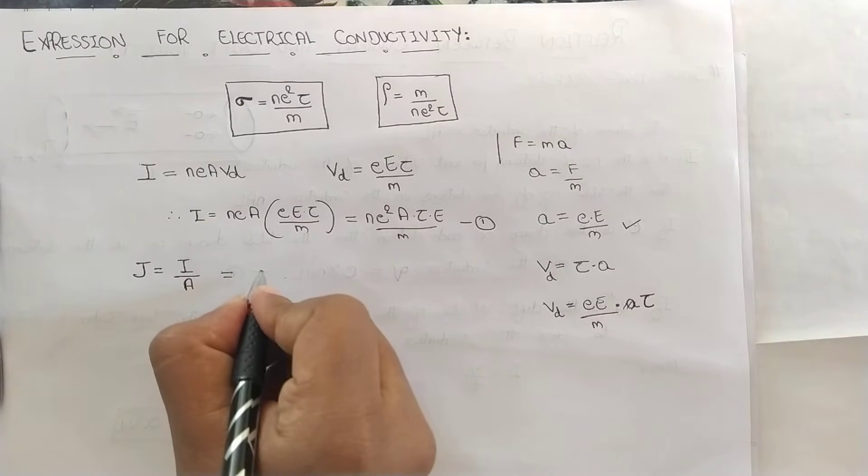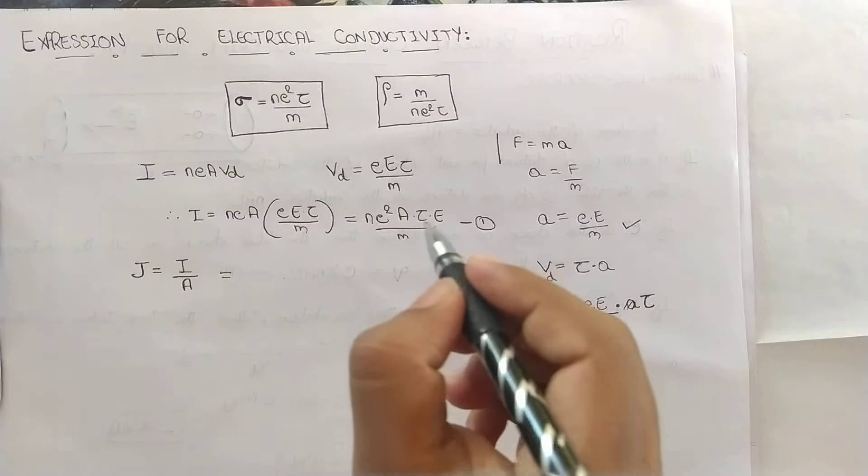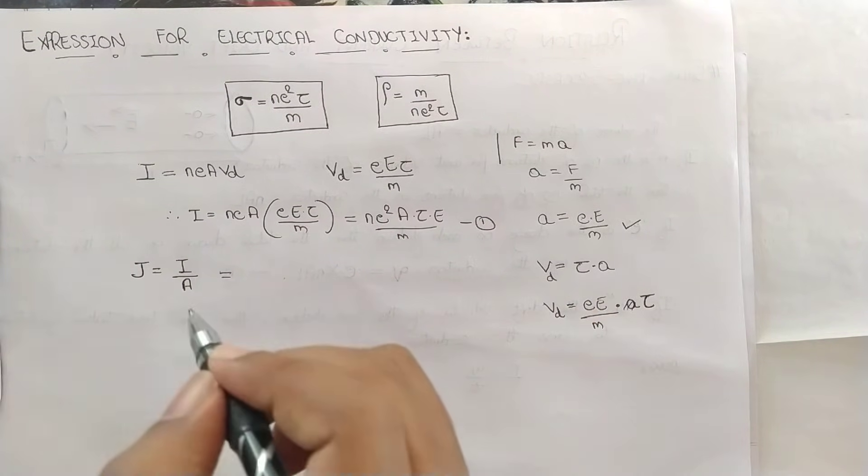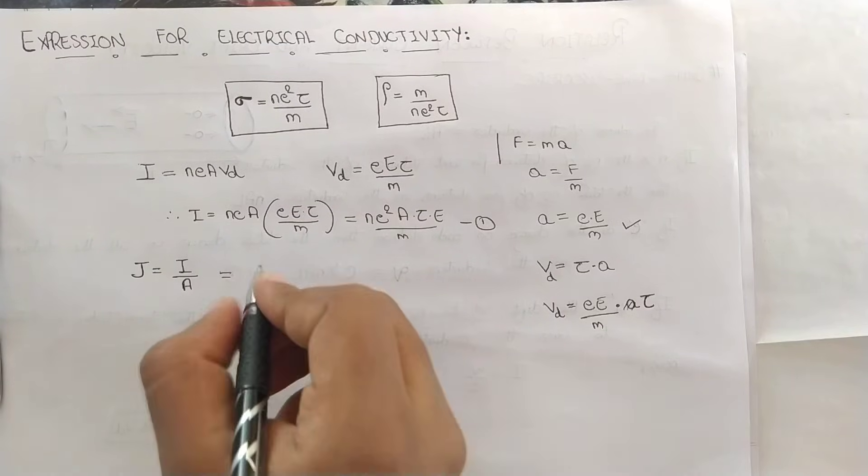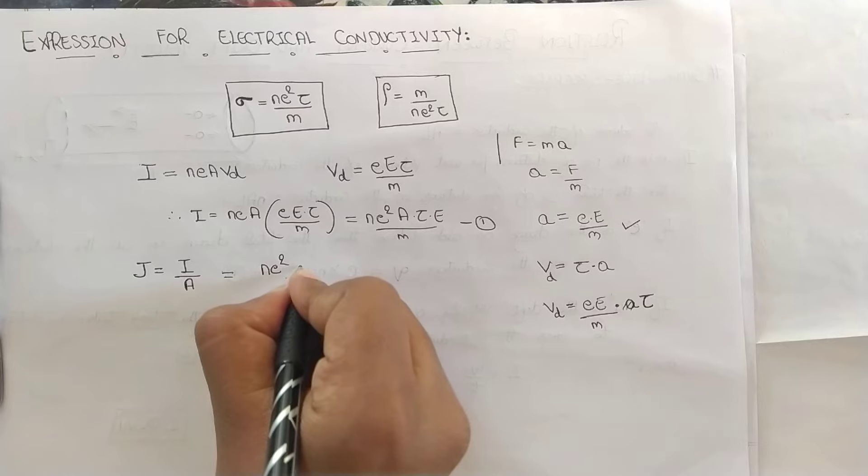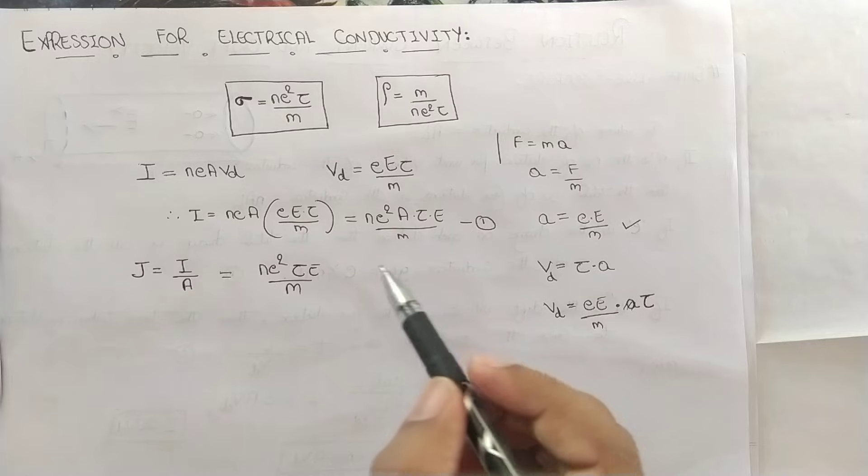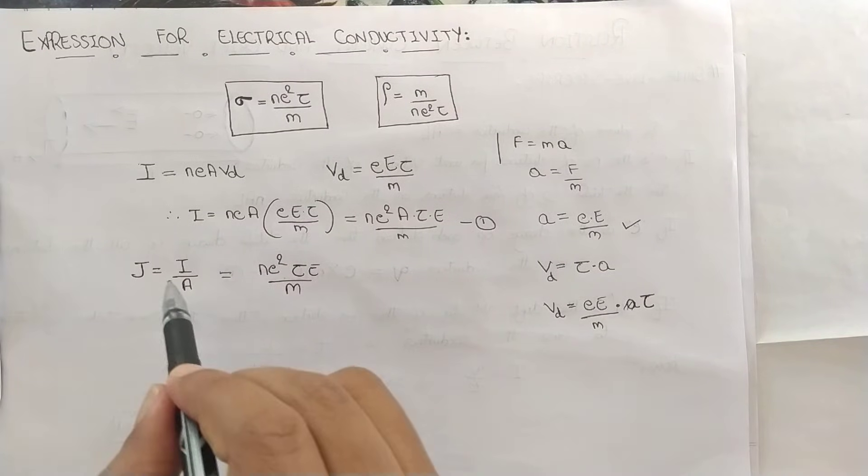I over A will cancel A on both in the expression 1 and the current density formula. Cancelling A each other will give you N E square into tau E over M. As you substitute the I value in this equation, we will get this form and let us consider this form as equation 2.